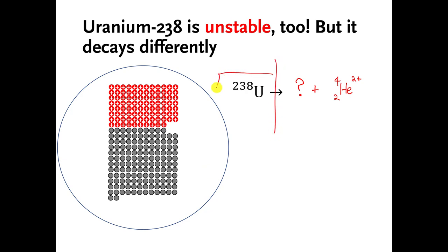We can play the same game as we did in the previous video. The total weight of everything on the left side is 238. So the total weight of everything on the right side has to add up to 238. This time, the helium that got fired off weighs four. So the question mark has to weigh or have a mass number of 234 because 234 plus four gives us 238. We're almost done.